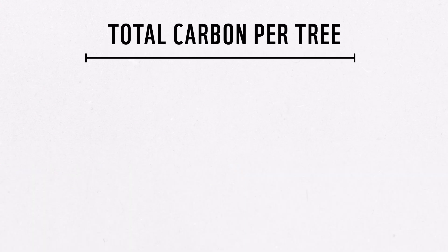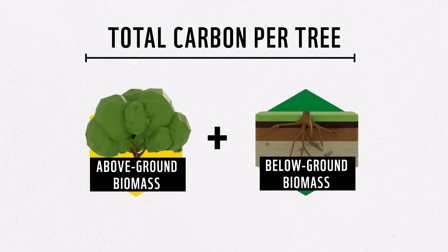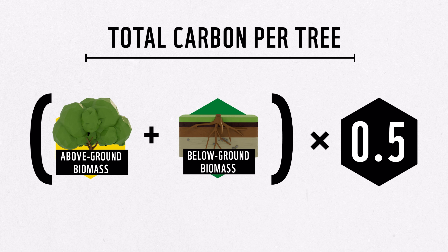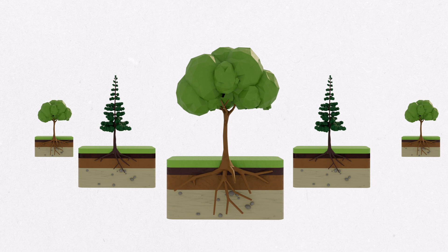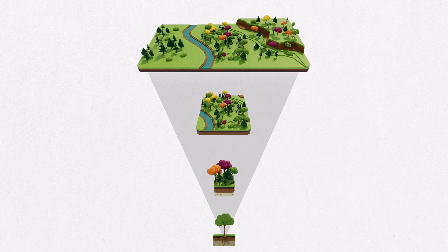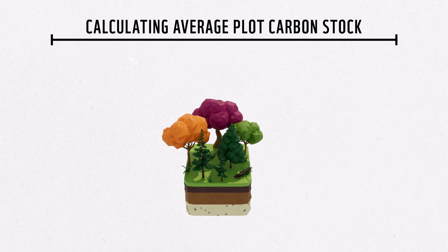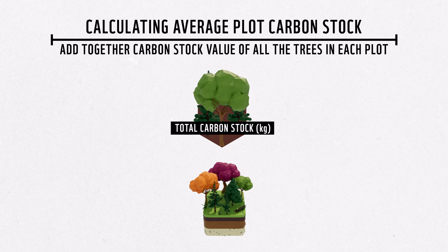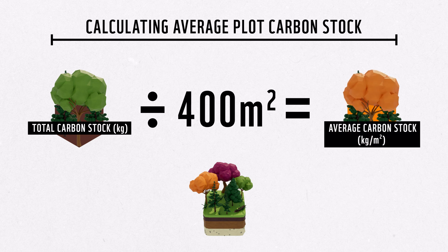Finally, to calculate the total carbon per tree, add the above-ground biomass calculated for each tree with the below-ground biomass calculated for each tree, and multiply that result by the generic carbon conversion factor of 0.5. Do these calculations for all the trees in your 400-metre-square plot. To scale from individual tree carbon stock to plot, to site, to study area, start by calculating the average carbon stock within the 400-metre-square plot. To do this, add up the total carbon stock calculated for all the trees in the plot in kilograms. Then, divide this value by 400-metre-square to obtain the carbon stock in kilograms per square-metre area.